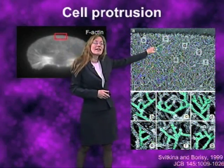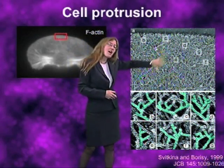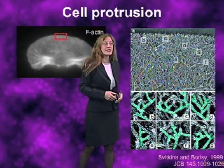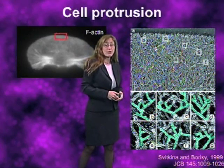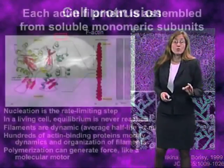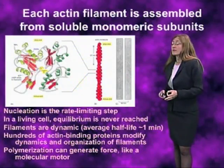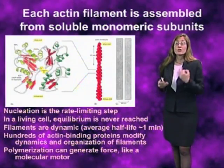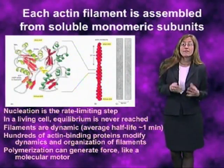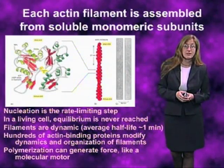Looking at this image, what you can see is hundreds of different filaments that are all cross-linked together at the leading edge of the cell, pushing its way forward. Now, if you were to look at any one of those individual filaments, what you would see is that the filament itself is in turn made up of hundreds or thousands of subunits of individual actin proteins that self-assemble to make the filaments.